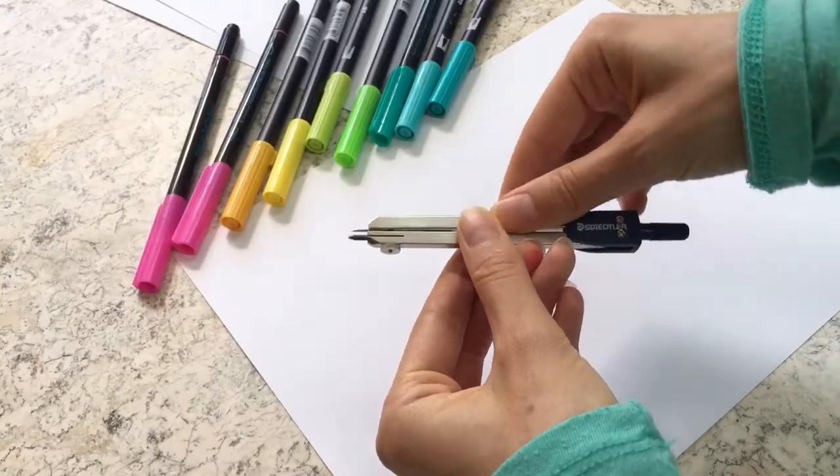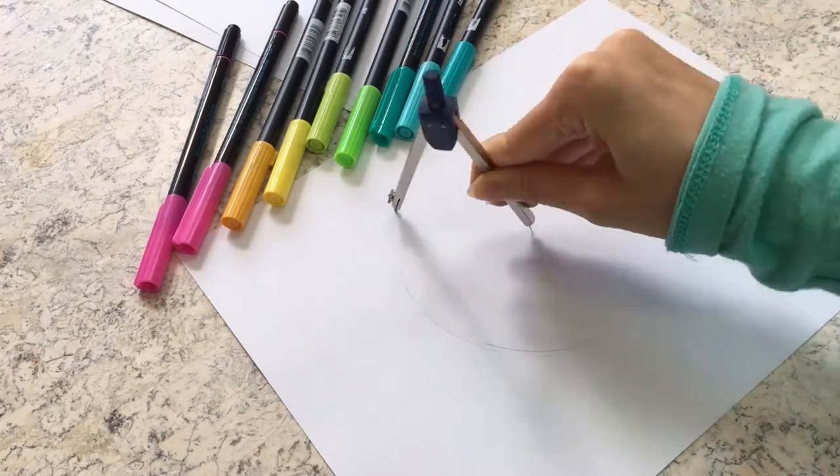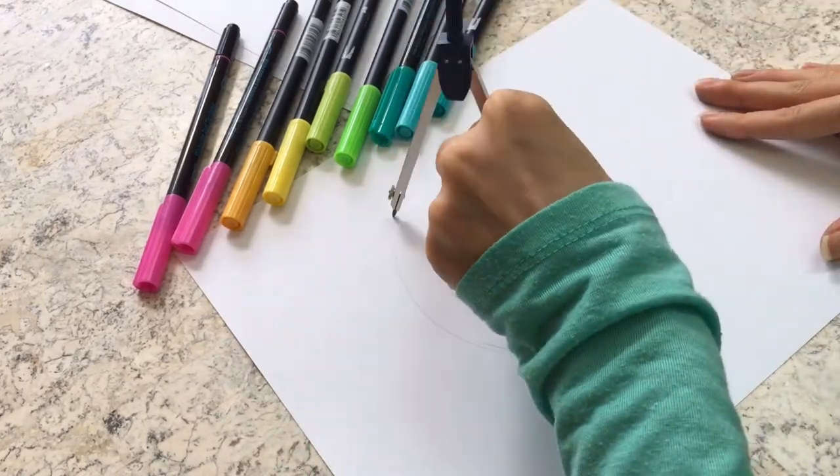You'll also need something that can help you make a circle like a circular object that you can trace or a compass which can help you make circles of different sizes.